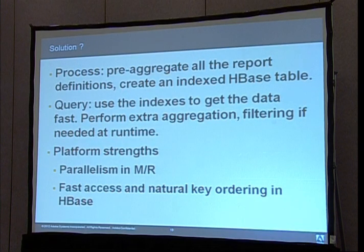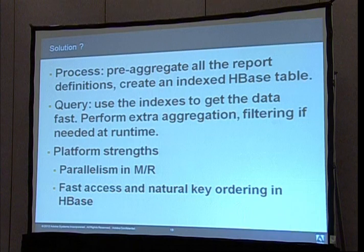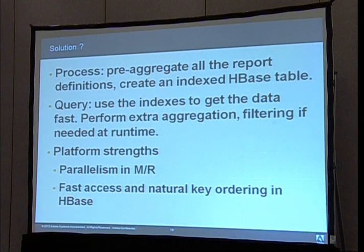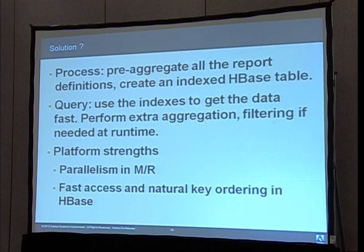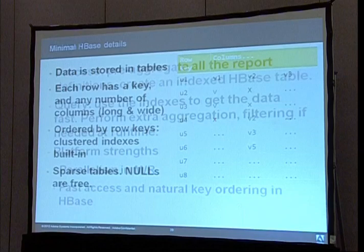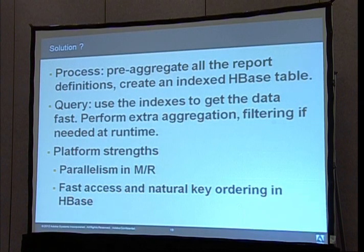Our solution: in the processing step, we pre-aggregate all the report definitions we know beforehand and create an indexed HBase table. Then at query time, we use the indexes to get to the data fast, and we can also perform extra aggregation, roll-ups, or slicing at runtime. Doing this, we use exactly the platform's strengths — parallelism from Hadoop MapReduce, and fast access with natural key ordering in HBase.